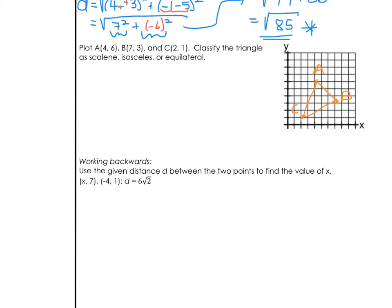Looking at the triangle at the right, scalene would mean all three sides have different lengths. Isosceles means two of the three sides have equal length. Equilateral means all three sides have equal length. Therefore, to classify the triangle, we will apply the distance formula. Let's first find the length of segment AB.